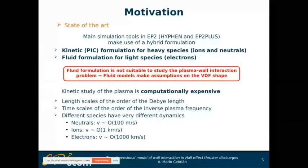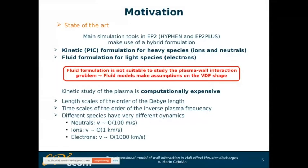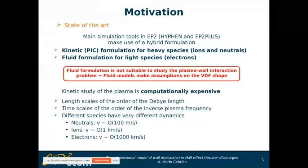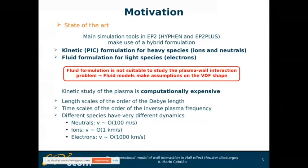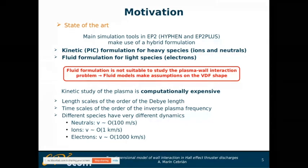In the state of the art, I'm going to talk about the simulation codes currently used at EP2, mainly Hyphen and EP2+, which use a hybrid formulation. This means it uses a kinetic or PIC formulation for heavy species, so the velocity distribution function is solved for them, but it uses a fluid formulation for light species like electrons, where we only have information about macroscopic magnitudes.